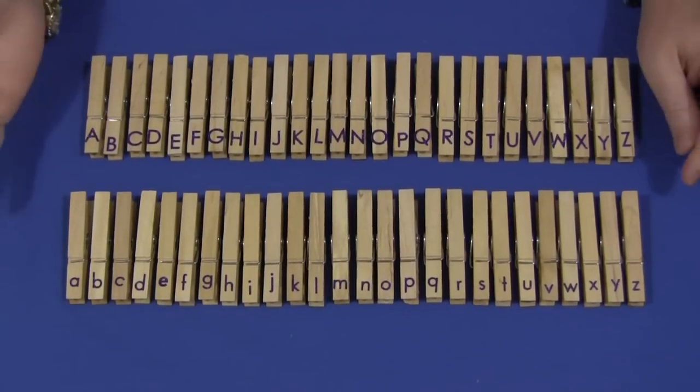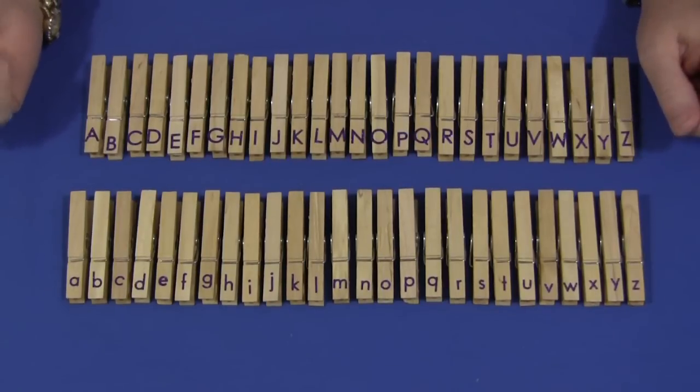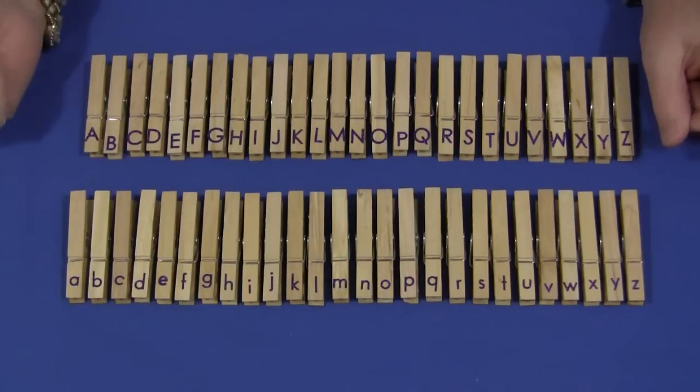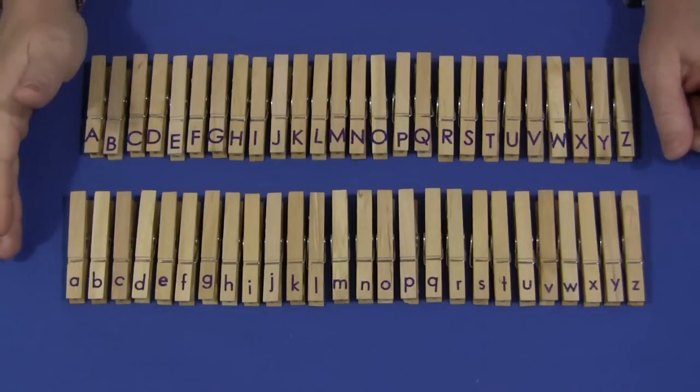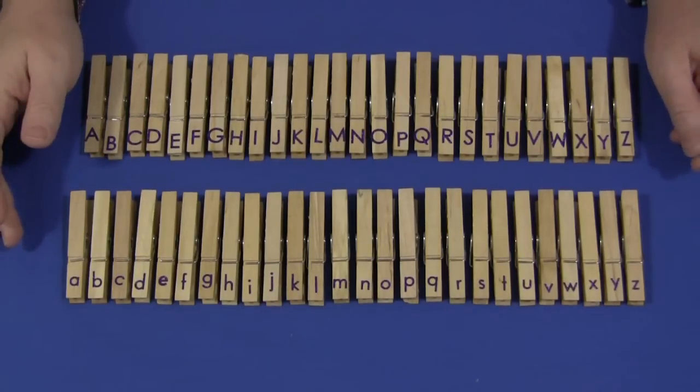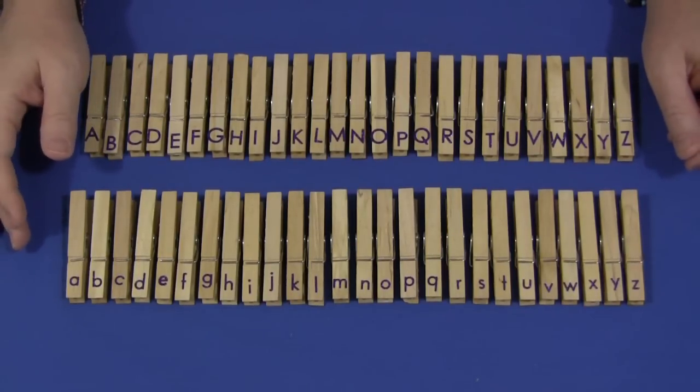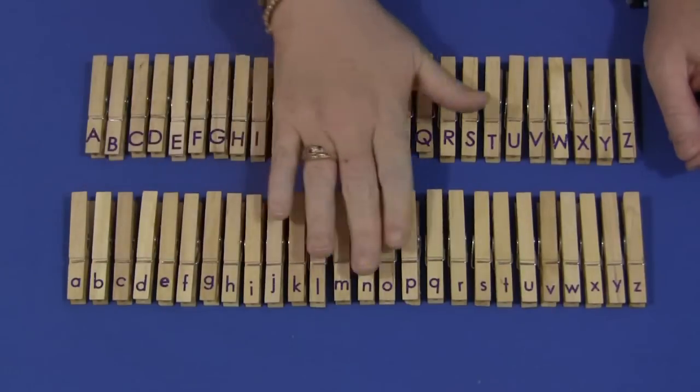All you would need are the wooden clothespins and you can either hand write them on, but because I'm left handed and my handwriting is not the greatest, I choose to put stickers on. For that I just went to a craft store and I went to the scrapbooking section and they have all kinds of stickers, letters, alphabet stickers on there.